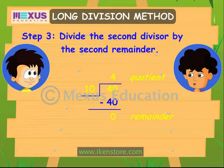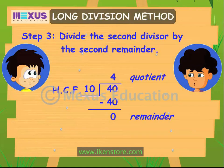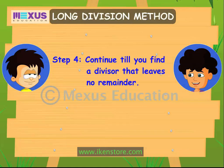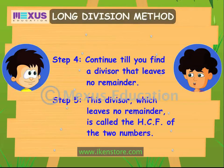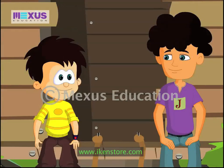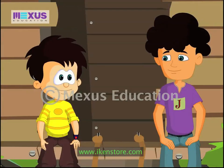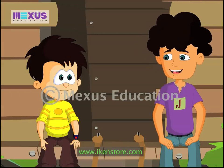There you go — 10 is our HCF. You see, we carry on dividing till the remainder becomes 0, and the divisor that leaves no remainder is the HCF of the two numbers. Cool, thanks, bro. No problem, JC.